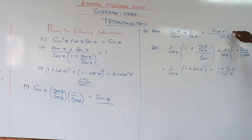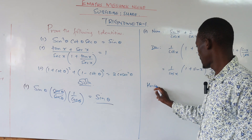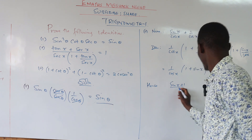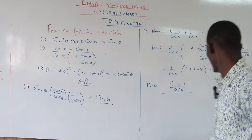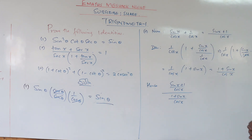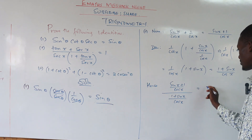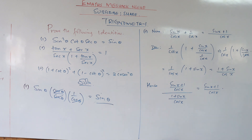So our numerator is sine of x plus one all over cosine of x, and our denominator is one plus sine of x all over cosine of x. Putting them together — sine of x plus one over cosine of x — divided by one plus sine of x over cosine of x. This is a fraction divided by a fraction, so we change it to multiplication and reciprocate: multiply by cosine of x over one plus sine of x.